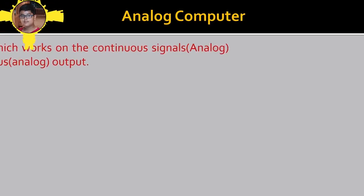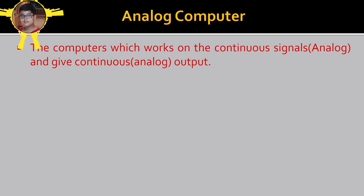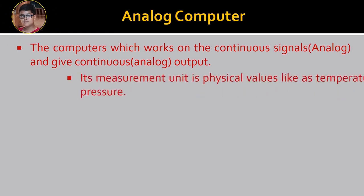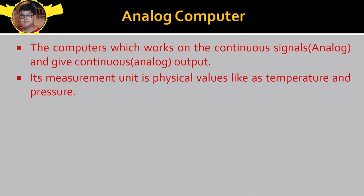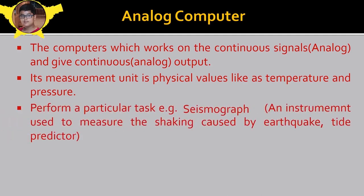Now, we have come to Analog Computer. The Computers which work on Continuous Signal and give Continuous Output. That means, they also process the data in Analog and give Output in Analog. Its Measurement Unit is Physical Values like Temperature and Pressure. It is used to perform a particular and specified task. For example, Seismograph. Seismograph is an instrument used to measure the shaking caused by Earthquake. It can also work as a tide predictor.